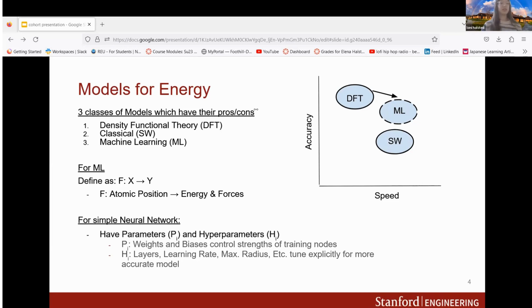For machine learning we can define it as a function with an input x that outputs y. In this case our input would be our atomic position and our output would be our energy and forces. For a neural network we have parameters and hyperparameters. Hyperparameters are things that we can tune explicitly for a more accurate model.